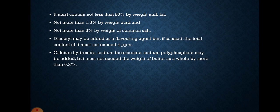Creamery or table butter should contain not less than 80 percent by weight milk fat, not more than 1.5 percent by weight curd, and not more than 3 percent by weight of common salt. Diacetyl may be added as a flavoring agent, but if so used the total content must not exceed 4 ppm. Calcium hydroxide, sodium bicarbonate, and sodium polyphosphate may be added but must not exceed 0.2 percent by weight of butter.